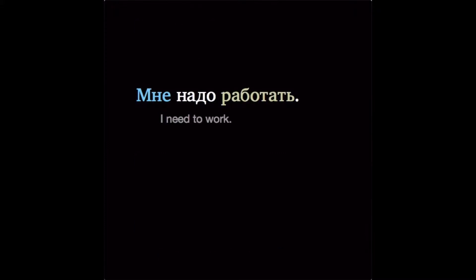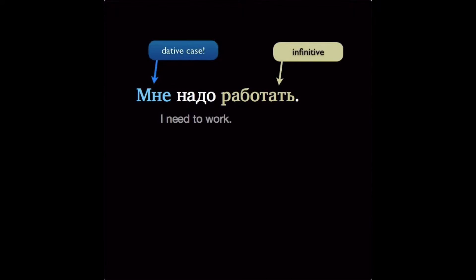In English, I am the subject, and there's a verb, need. In Russian, we have мне — that's the dative case of я — and надо, a form that never changes. And note how we're using the infinitive, работать. We're not conjugating the verb, since there's no grammatical subject for it to agree with anyway. So literally, we're saying: to me, necessary, to work.